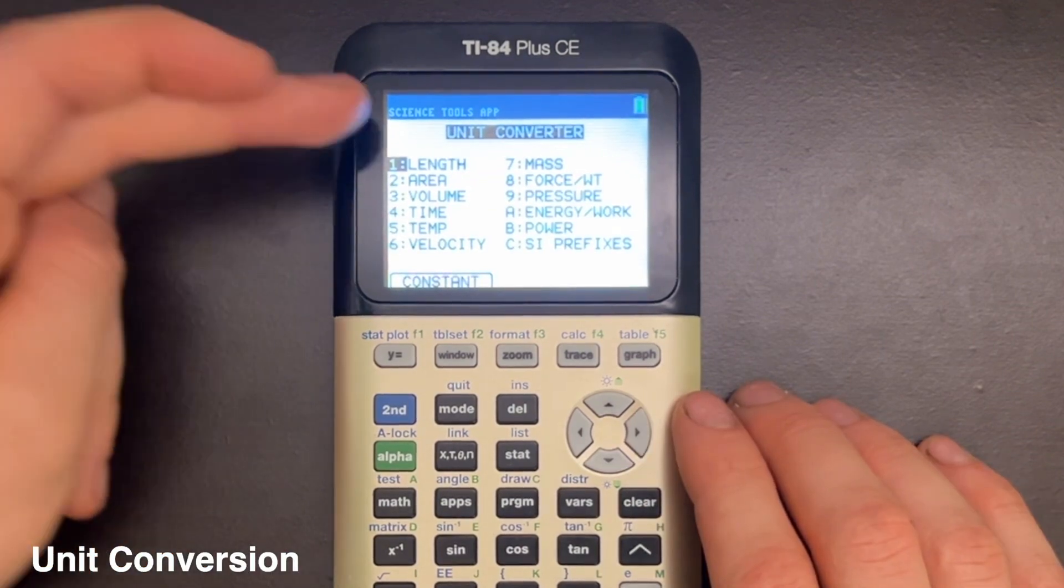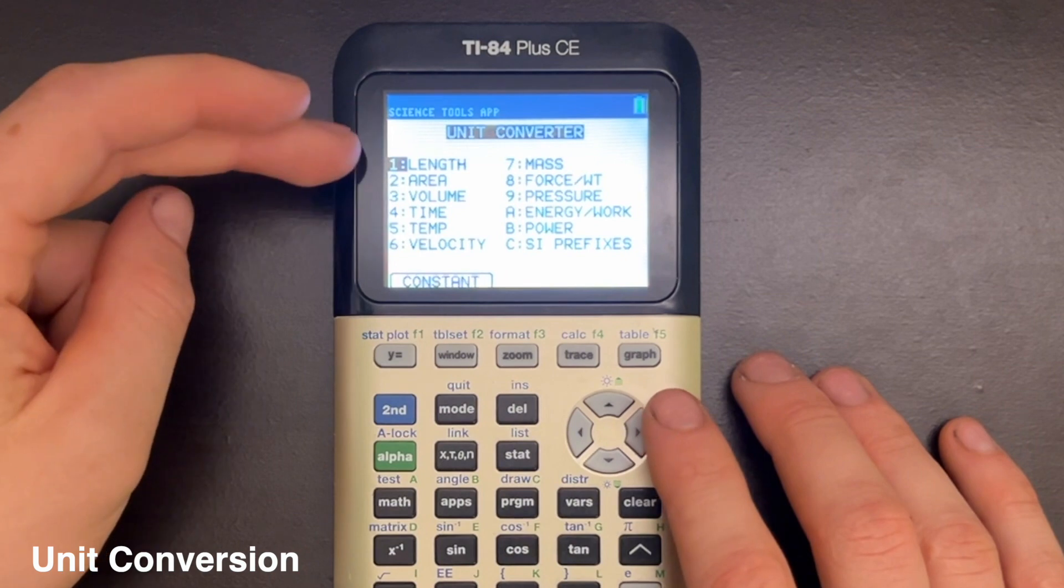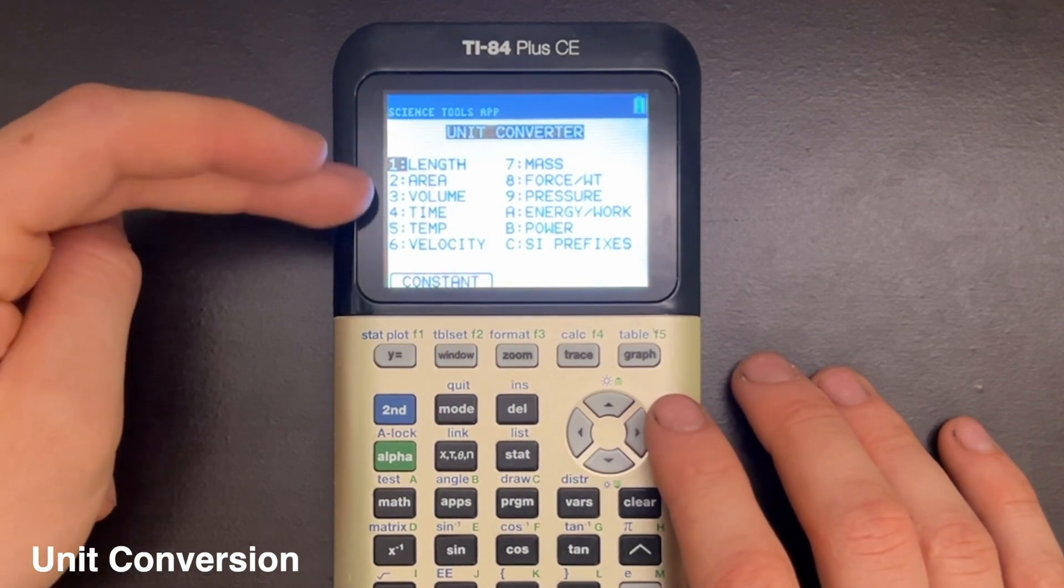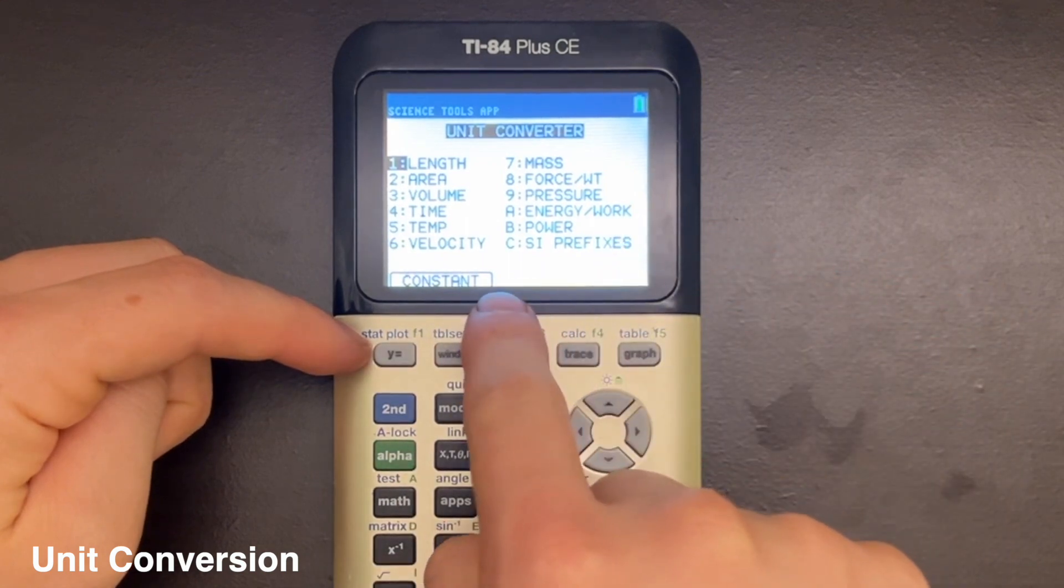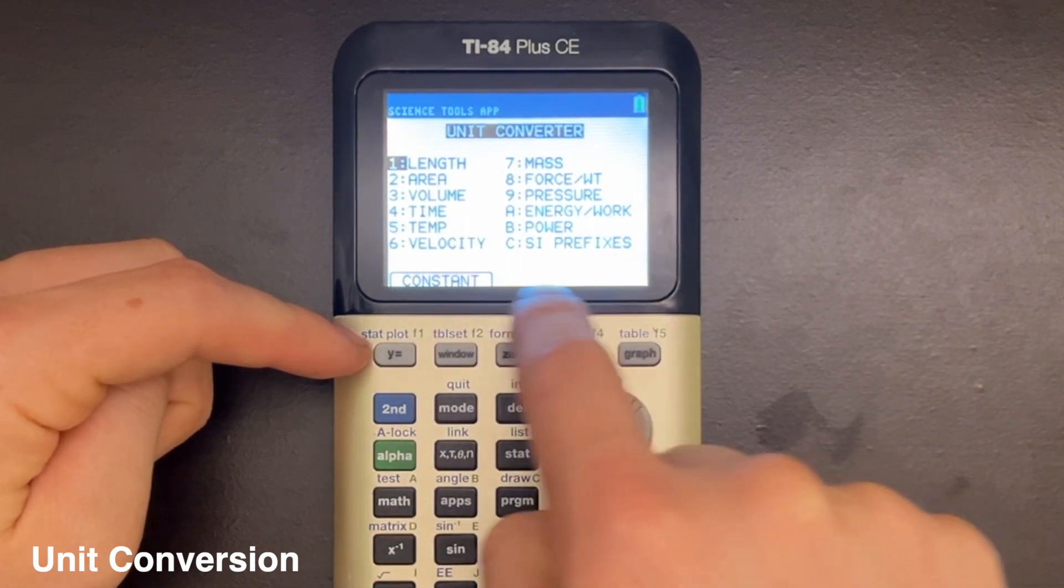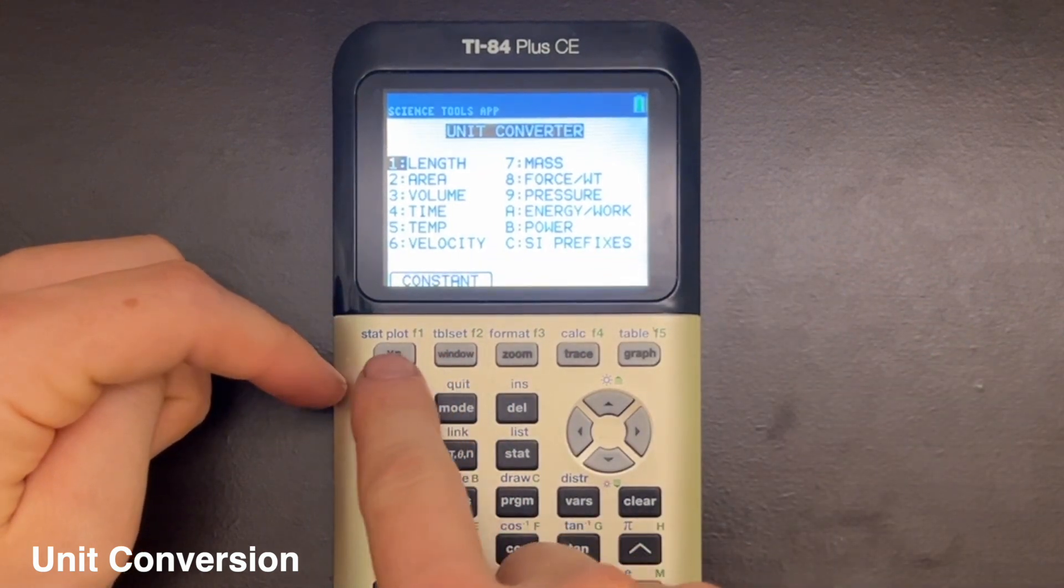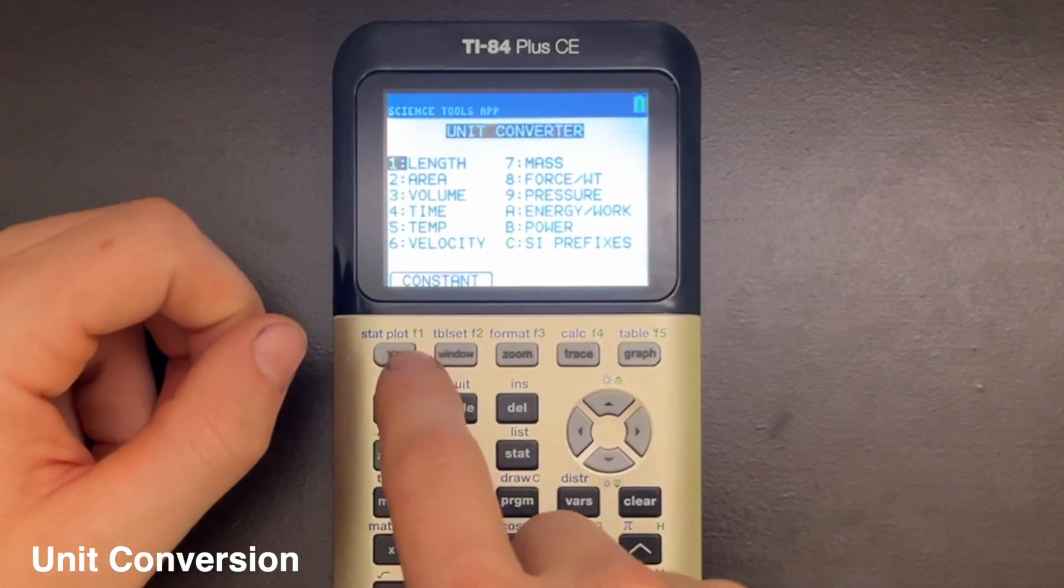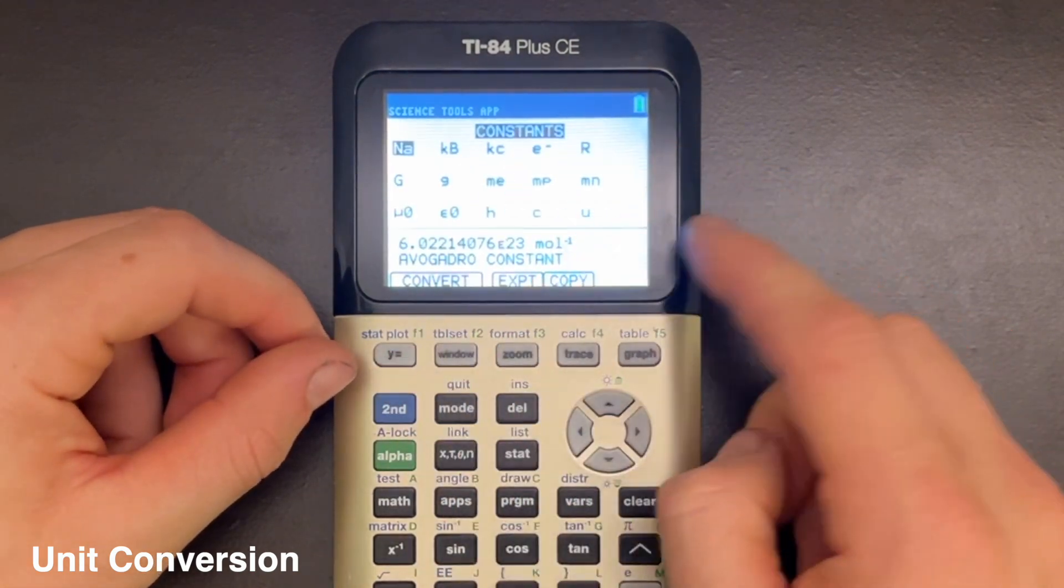From here you'll be brought to this main Unit Converter menu screen where you can select what type of unit conversion you want to do, and then at the bottom here you can use these hotkeys to select various options that will show up at the bottom of the screen. Using either of these two buttons here, you can toggle between the Unit Converter and the Constants screen, which I will get to in a second.